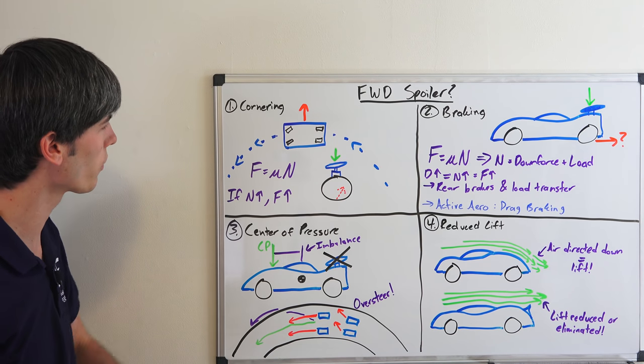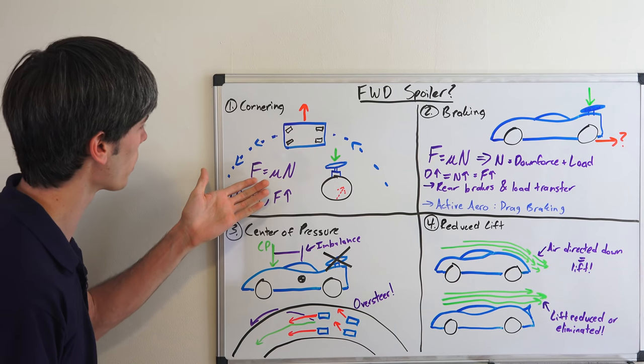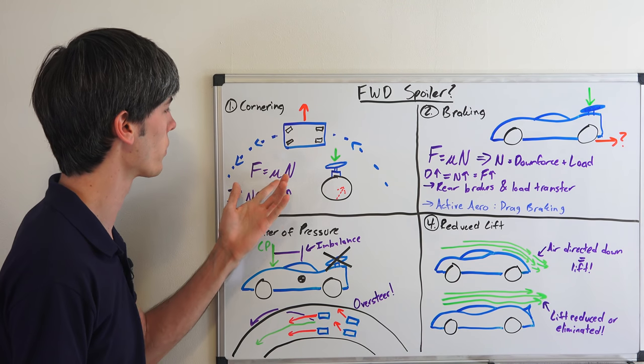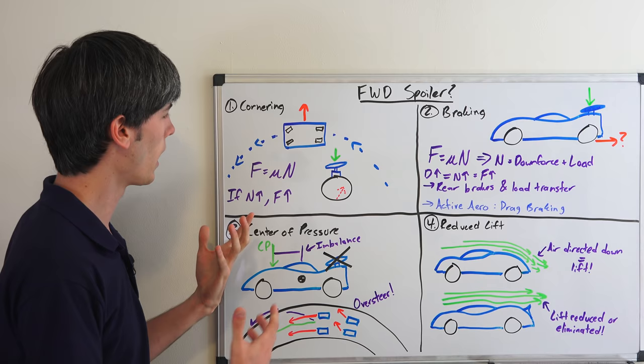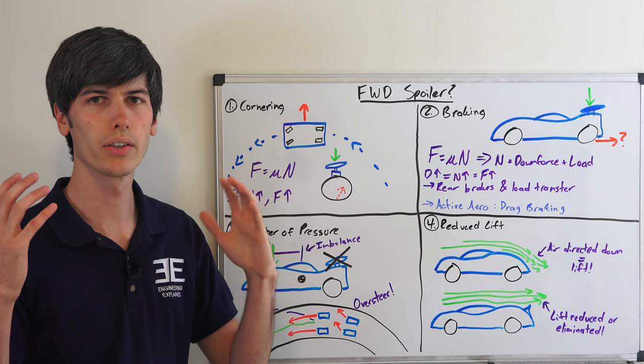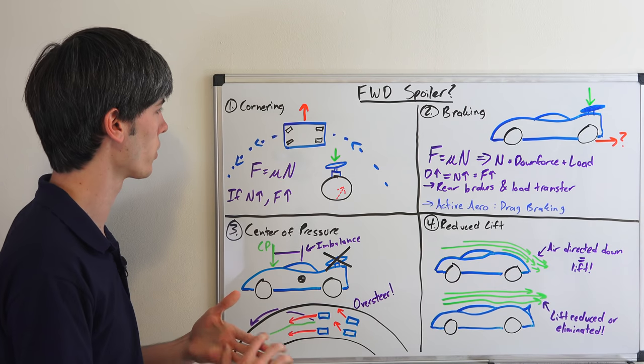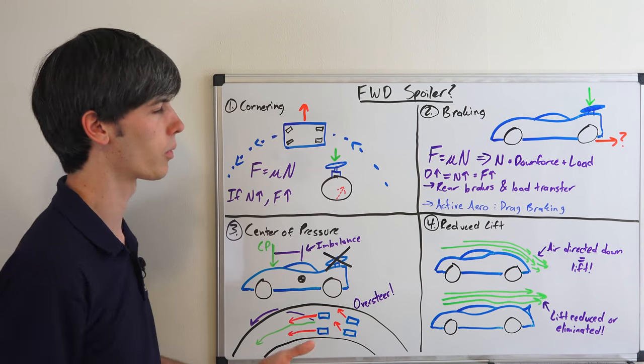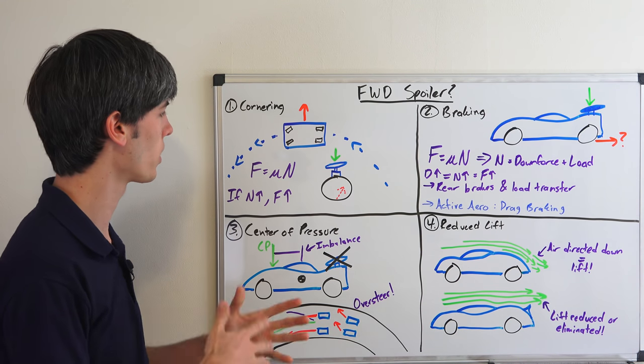So the first thing we're going to get into is cornering. And this is going to bring up the lovely equation: force equals coefficient of friction times the normal force. And this is an equation I've used quite a bit in my previous videos. I'll have all kinds of related content in the video description, so if you want to get into more detail into one of these subjects, check out the video description.